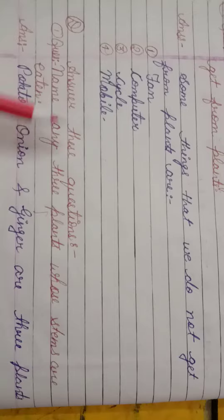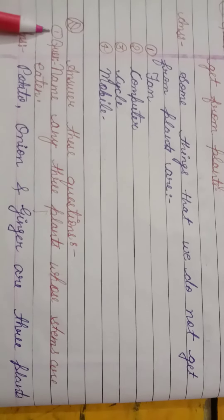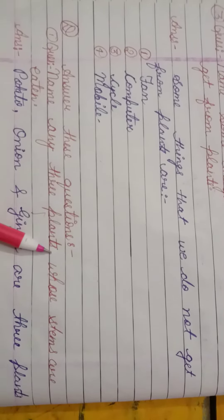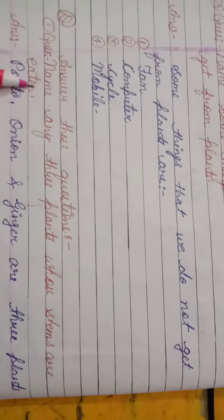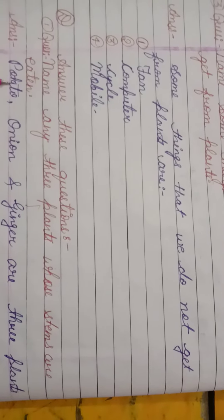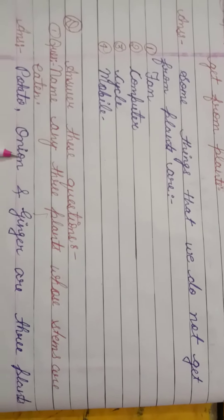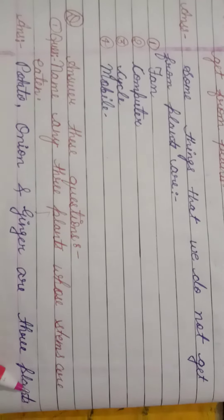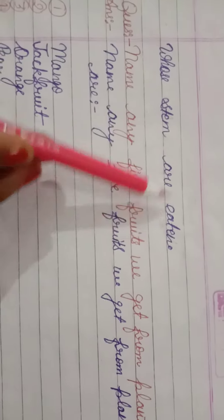Answer these questions. First question: Name any 3 plants whose stems are eaten. Answer: Potato, onion and ginger are 3 plants whose stems are eaten.